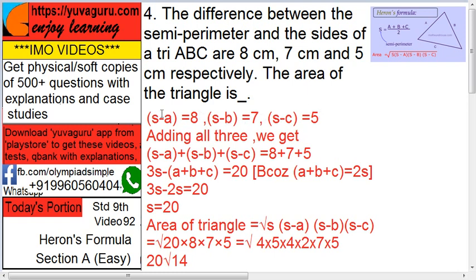Now add this. You get S minus A, all this addition, and this is 20 over here. This S gets added: 3S minus A plus B plus C equals 20. But what is A plus B plus C? Here, S is what? A plus B plus C upon 2. So times 2, A plus B plus C will be equal to 2S.